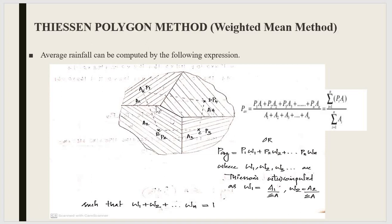The polygon formed by the perpendicular bisectors around each station encloses an area. The area around station A is A1, around station B is A2, around station C is A3, and around station D is A4. So we have four polygons A1, A2, A3, and A4, which all combine to form the total catchment area. The next step is to find the area of each polygon.